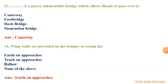The thirteenth question — fill in the blank: a submersible bridge which allows fluid to pass over it. The first option is causeway, second is foot bridge, third is deck bridge, fourth is suspension bridge. The correct answer is causeway. The fourteenth question: wing walls are provided in a bridge to retain the — options are earth on approach, track on approaches, blast, and none of the above. The correct answer is earth approaches.